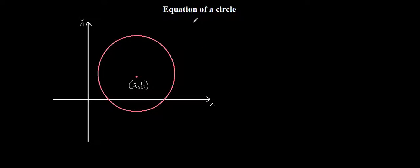We are going to talk about the general equation of a circle. I have already drawn a circle here. This is the circumference of the circle and this is the center, which I have given a coordinate of a comma b. I will consider any point on the circumference and denote that point with a general coordinate of x comma y.